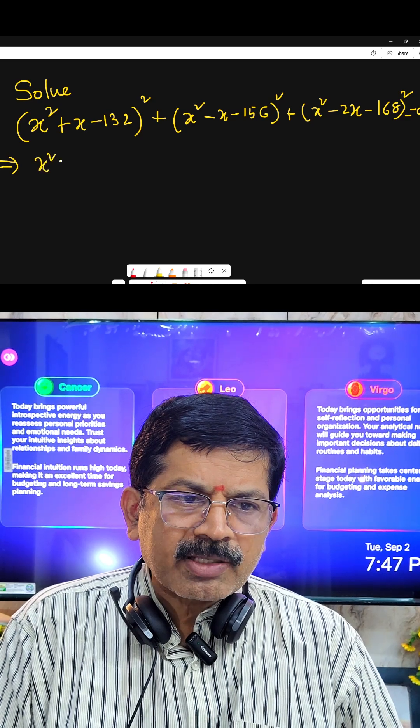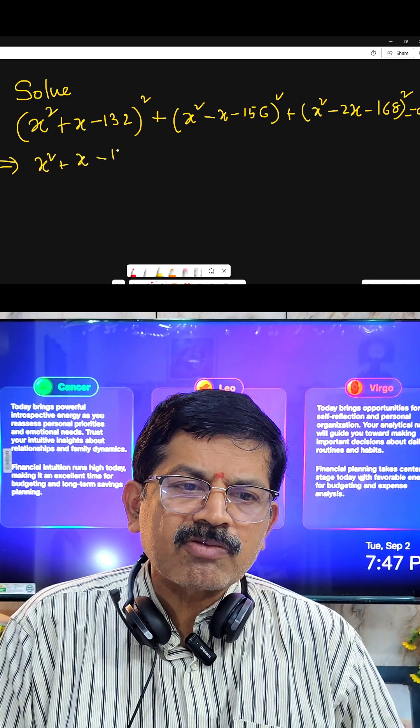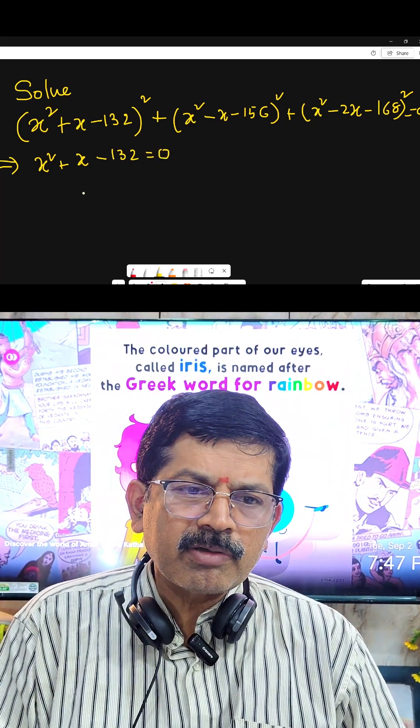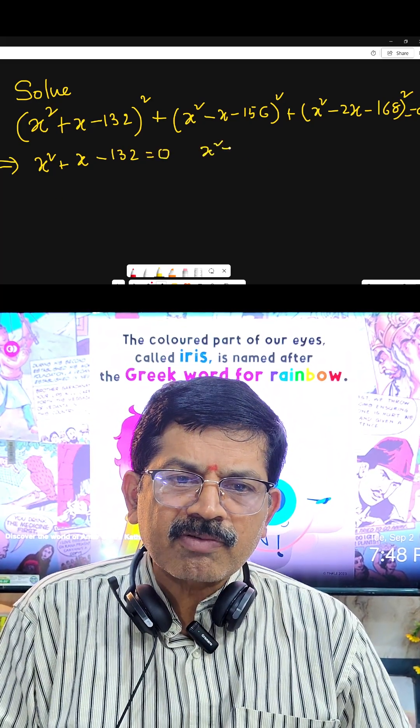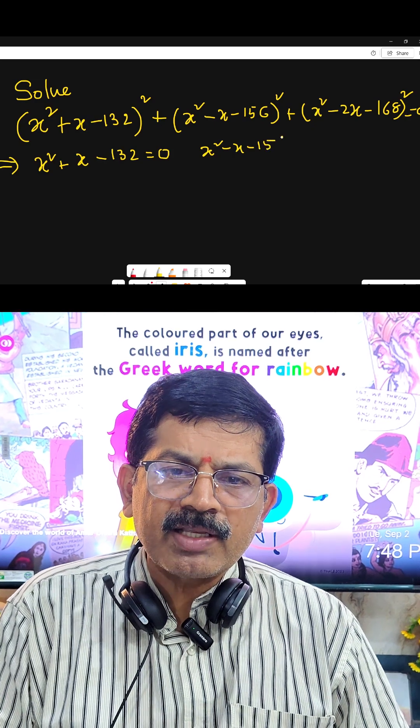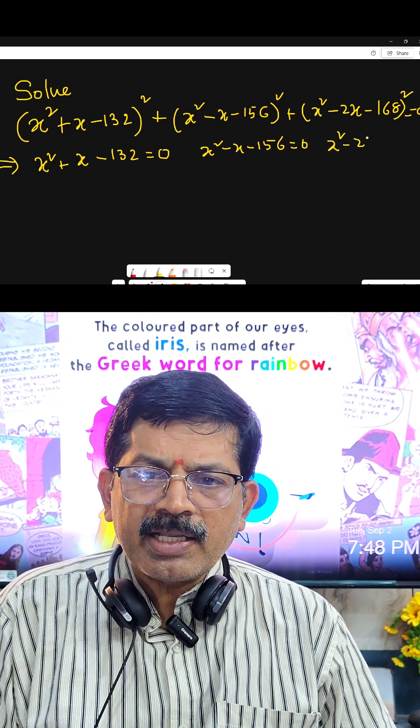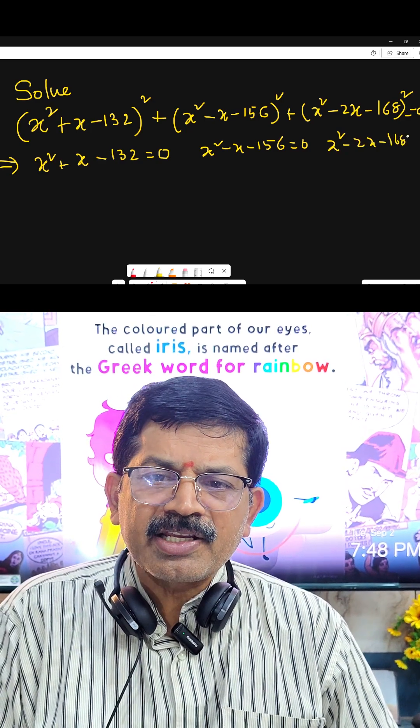First term (x² + x - 132)² = 0, therefore that equals 0. And second one, x² - x - 156 = 0. Third one, x² - 2x - 168 = 0.